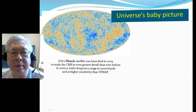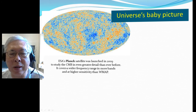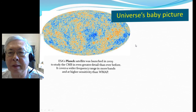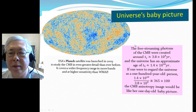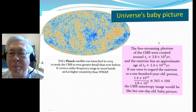Here's a picture by the European Space Agency's Planck satellite, which was launched in 2009 to study the CMB in even greater detail than ever before. It covers a wider frequency range in more bands and at higher sensitivity than WMAP. So we say this is the universe's baby picture.